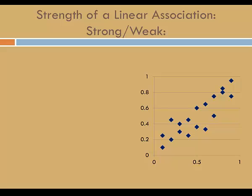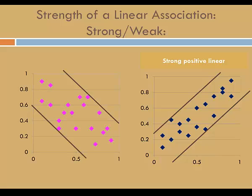In this example, the markers aren't lining up quite as well. It takes a broader band to capture all the markers. This is an example of a strong positive linear association. If we want a band to capture all the markers, we're pretty much going to need to cover our entire scatter plot. This is an example of a weak negative linear association.